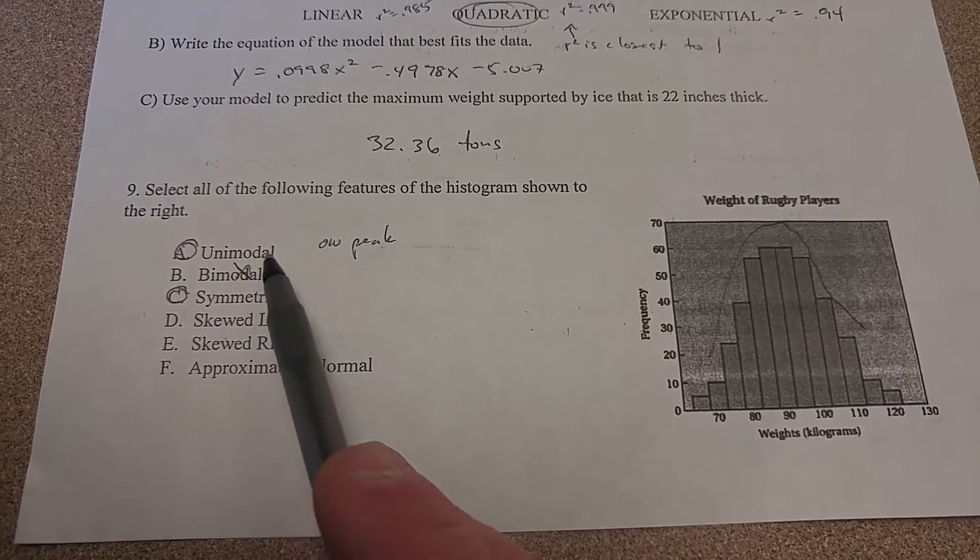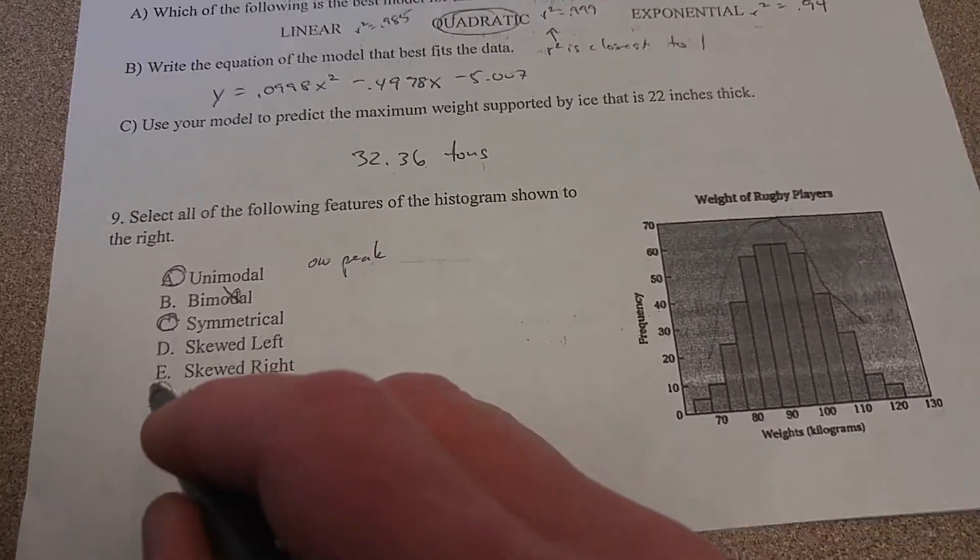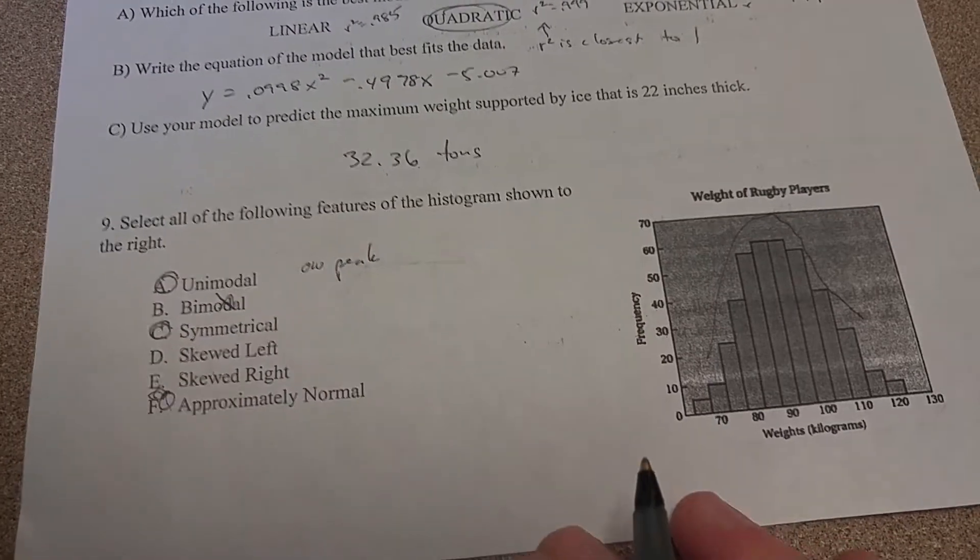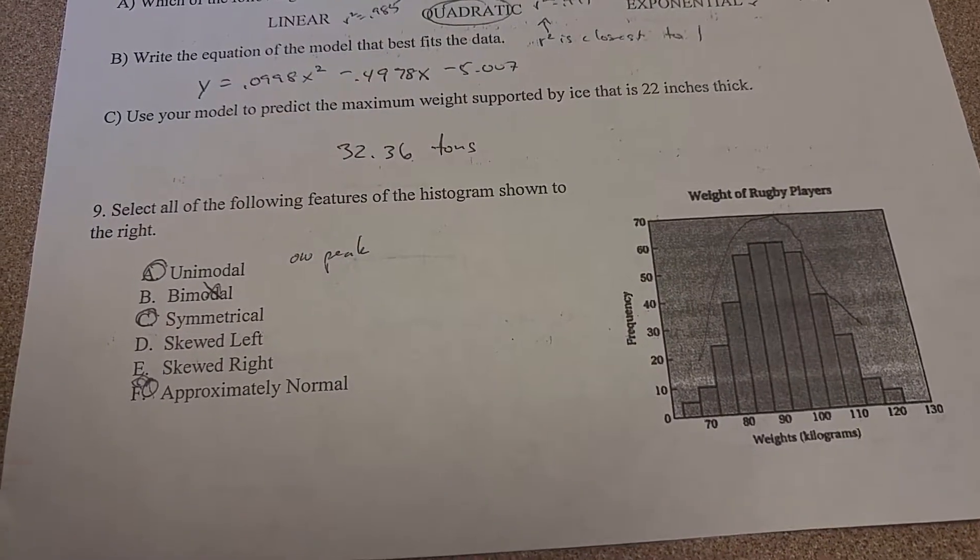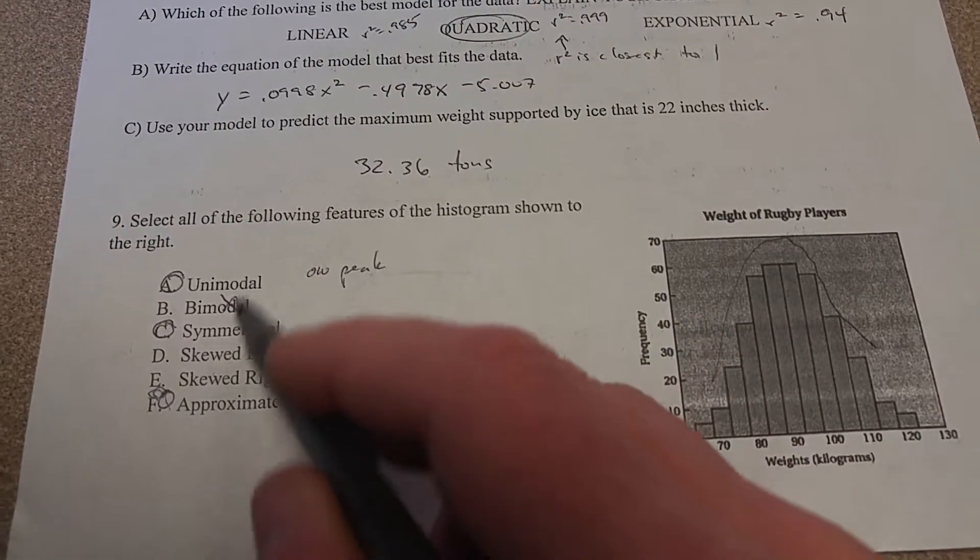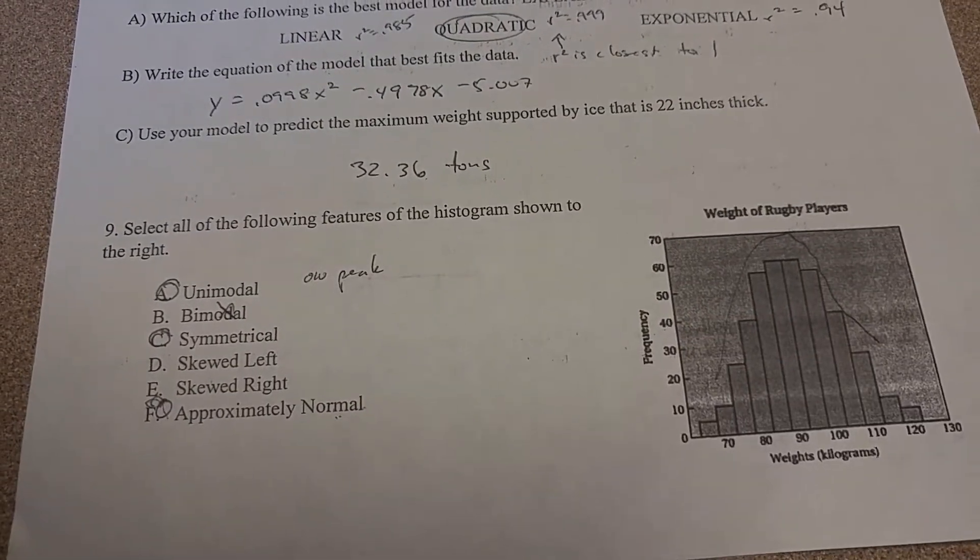And then things that are unimodal and symmetric, they have a special name and they are called normal. So this one is also approximately normal. And that's just vocabulary to know. Some of us missed the normal one. We got these two, but we forgot that it was also called normal.